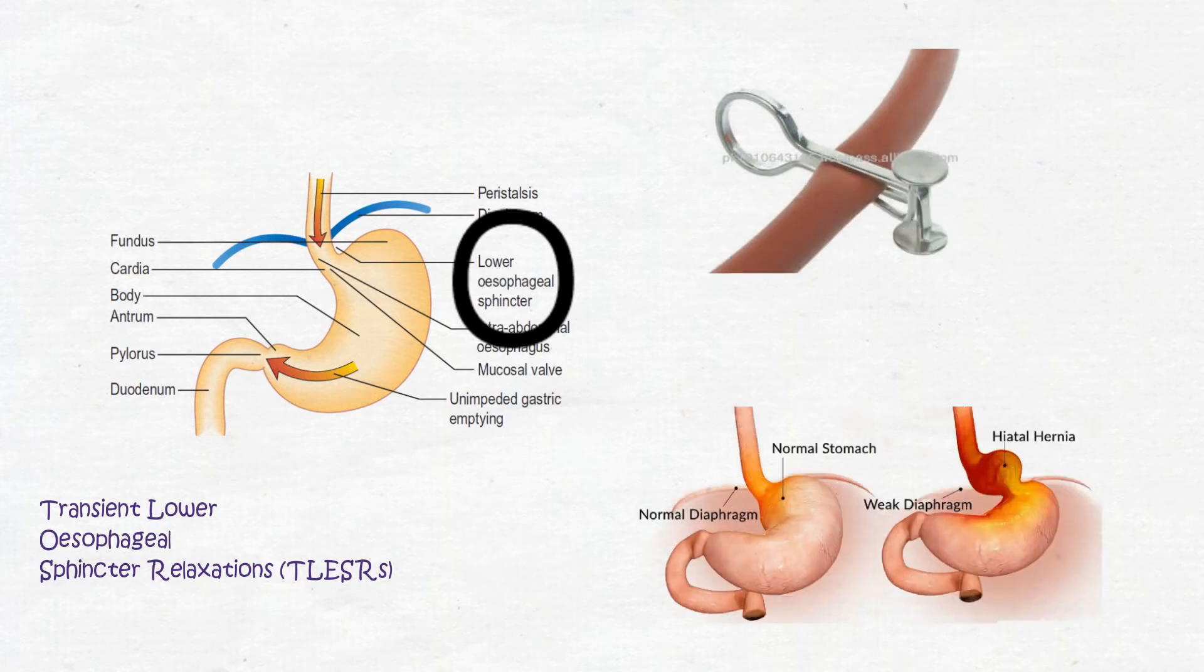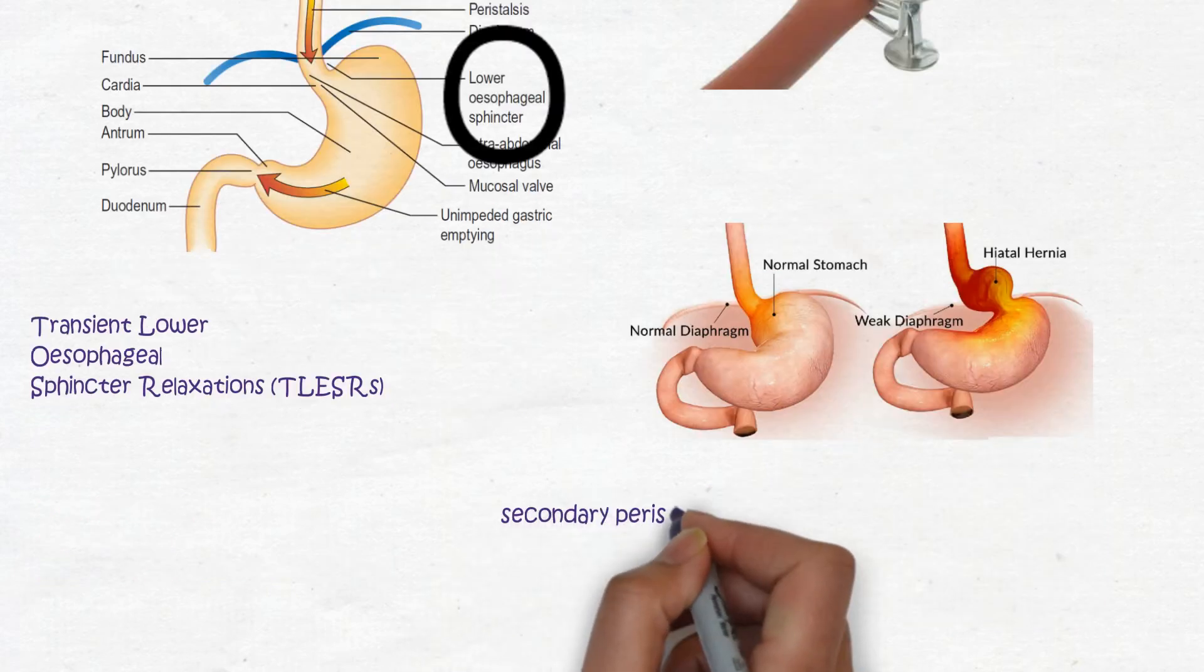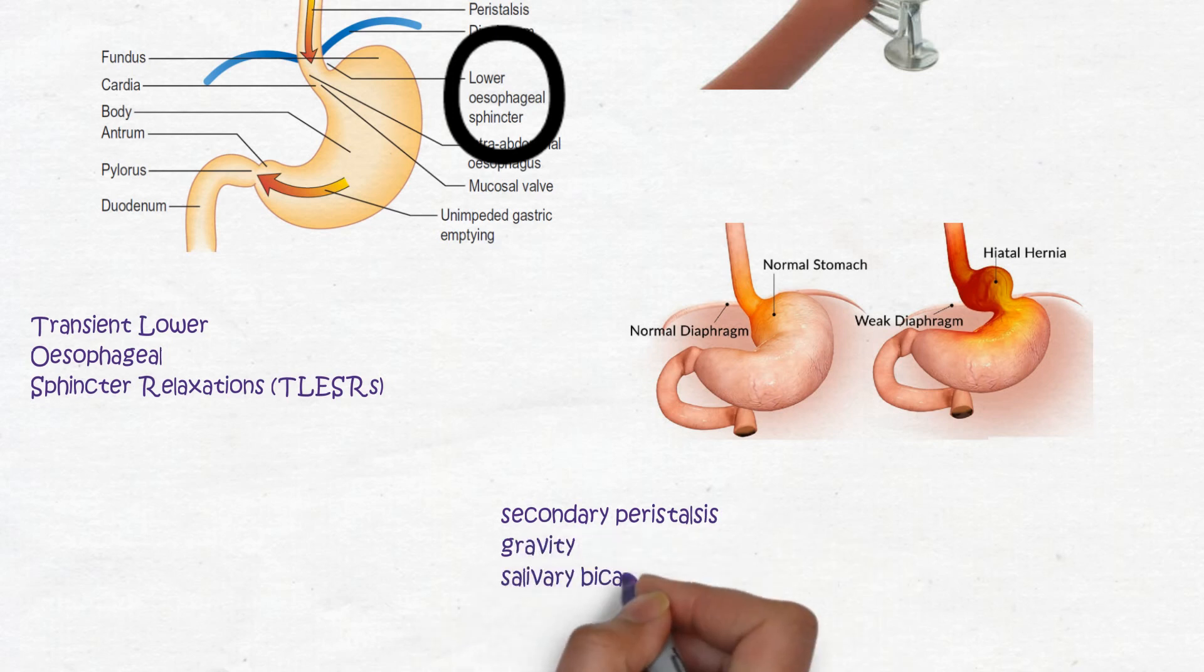A large hiatal hernia can impair this mechanism. The esophagus is also normally rapidly cleared of refluxate by secondary peristalsis, gravity and salivary bicarbonate.